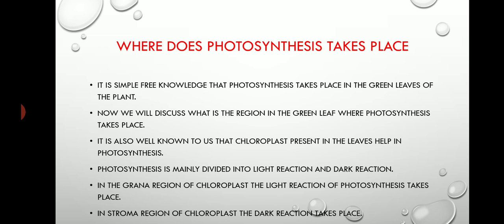From the simple pre-knowledge that photosynthesis takes place in the green leaves of the plant, we now discuss which specific region in the green leaf is responsible. It is the chloroplast present in the leaves that helps in photosynthesis. Photosynthesis is mainly divided into light reaction and dark reaction — the light-dependent phase and the light-independent phase.